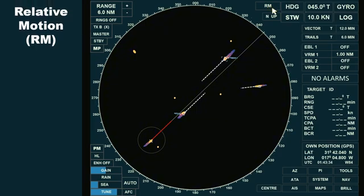The radar orientation remains north-up, in sea-stabilized mode. We're still using a true vector, with a 12-minute time frame, and the trail remains set to true, at a 6-minute duration.